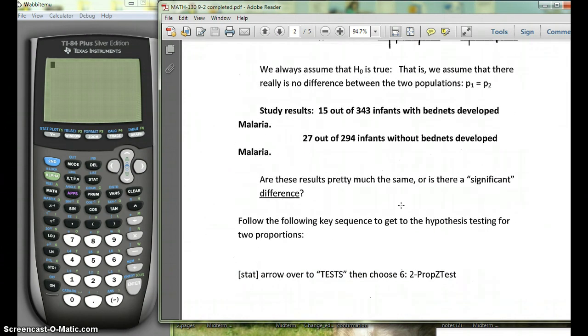So we're going to go down to the study results. The study results tell us that 15 out of 343 infants with the bed nets develop malaria and 27 out of 294 infants without bed nets develop malaria.